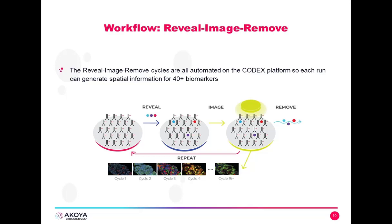In each CODEX cycle, we're collecting three targets as well as DAPI, so that we can image all of our target biomarkers using CODEX for a total of over 40 markers.